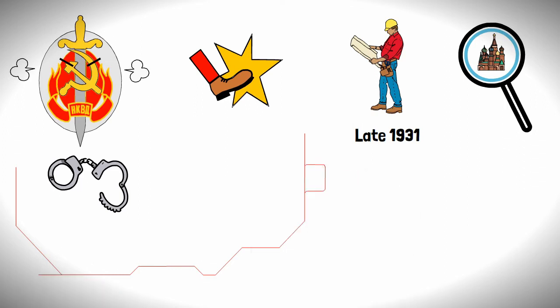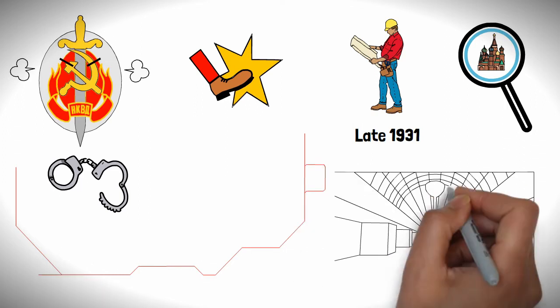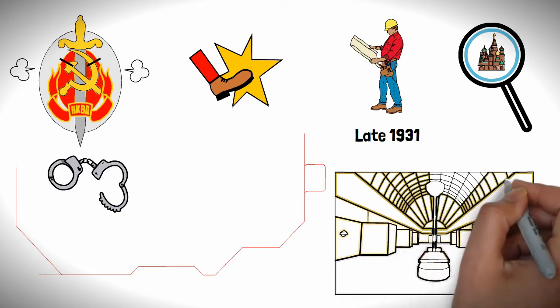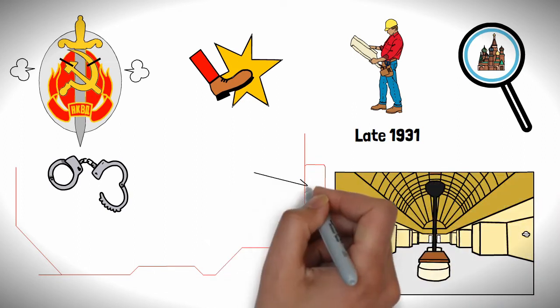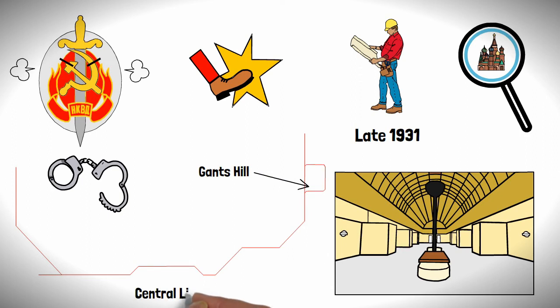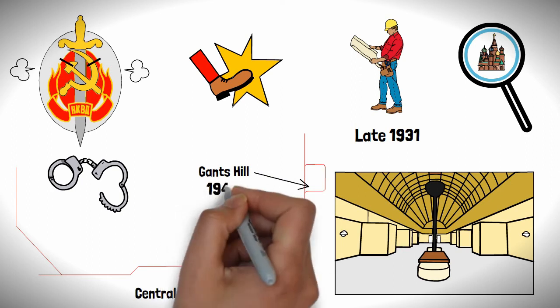However, this little collaboration between the Soviets and British didn't just extend to Moscow. In fact, the British built their very own Moscow metro-inspired tube station, Gants Hill, located on the central line, which opened in 1946.